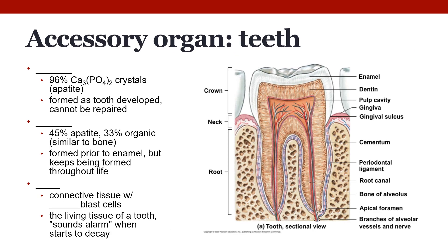Teeth are considered an accessory organ — they make direct contact with food, but only briefly. Teeth are on the top and bottom of the oral cavity; the top teeth are complementary to the bottom, and teeth on the left are a mirror image of those on the right. All teeth share similar parts. First, the enamel is a protective barrier, but it can be easily damaged by acid — soft drinks and bacteria in the mouth that produce acid when we eat sweets both damage enamel. Enamel is made up of calcium phosphate crystals, formed as the tooth develops, and unfortunately cannot be repaired once worn away.